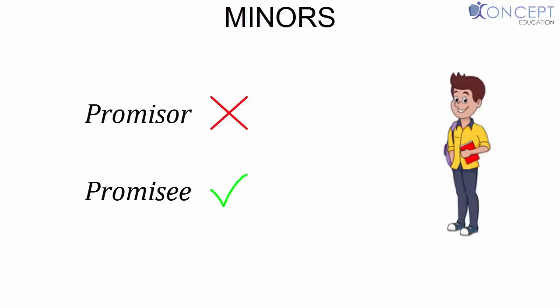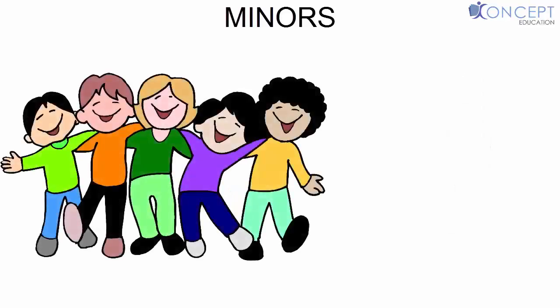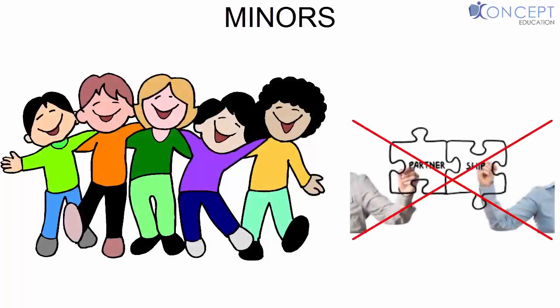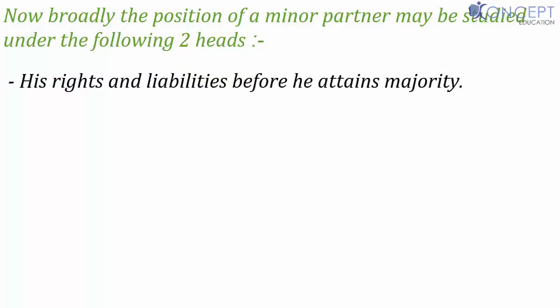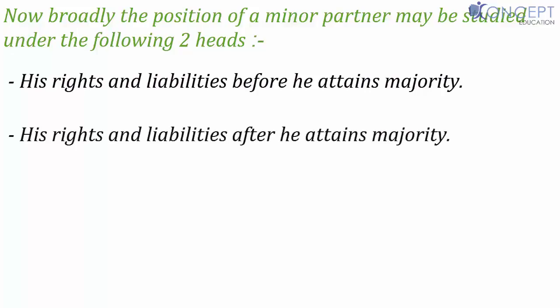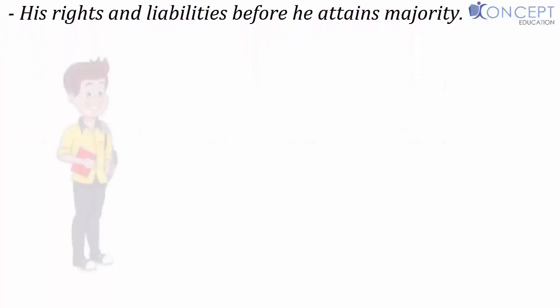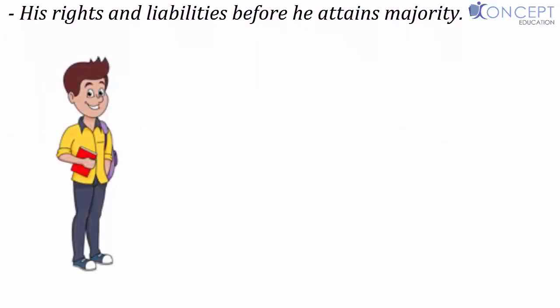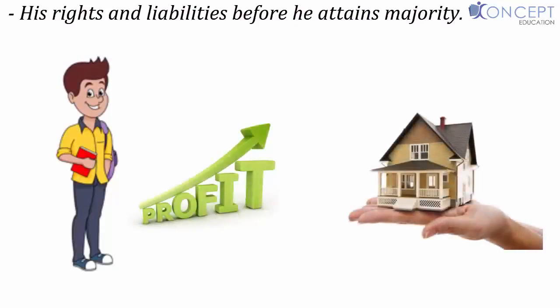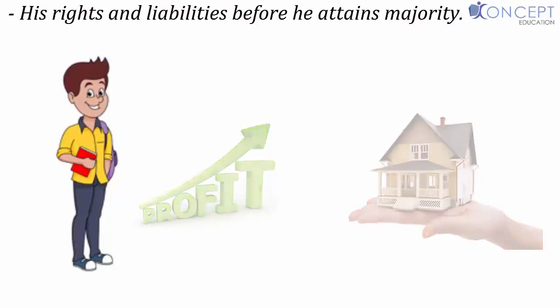This leads to one important conclusion: even a group of minors cannot form a partnership among themselves. Broadly, the position of a minor partner may be studied under two heads — rights and liabilities before attaining majority, and rights and liabilities after attaining majority. Before attaining majority, a minor has a right to such share of profits and property as was promised to him.